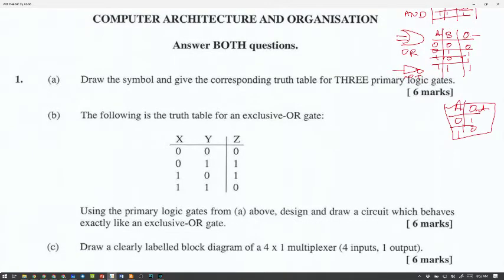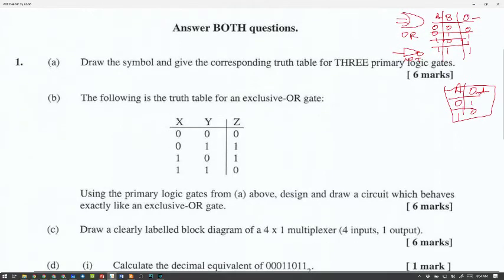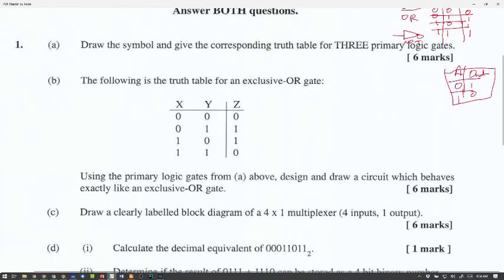The following is a truth table for an exclusive OR gate. The exclusive OR is going to be a particular circuit. And they want us to, using primary logic gates from above, design and draw a circuit which behaves exactly like an exclusive OR gate. Because it's this or that will give you a 1.